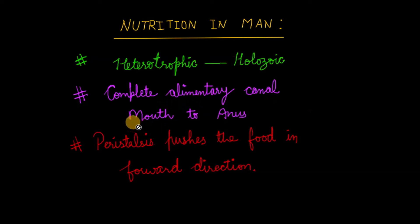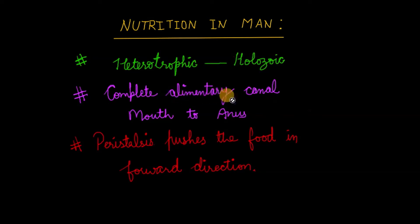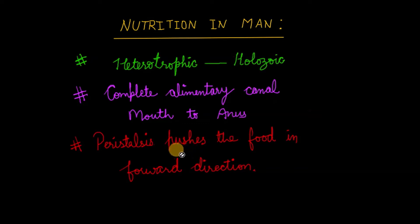One opening is for the ingestion of food, known as the mouth, and the other for the removal of undigested waste, known as the anus. Such an alimentary canal with two openings is known as a complete alimentary canal. The third point is peristalsis — the alternative and rhythmic contraction and relaxation of longitudinal and circular muscles of the gut lining creates peristaltic movements, which help to push the food in the forward direction.